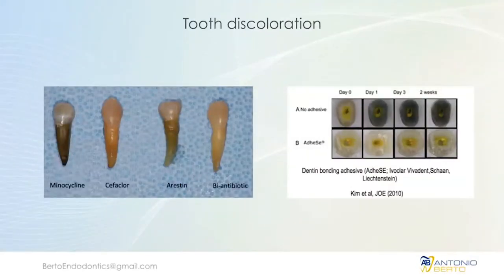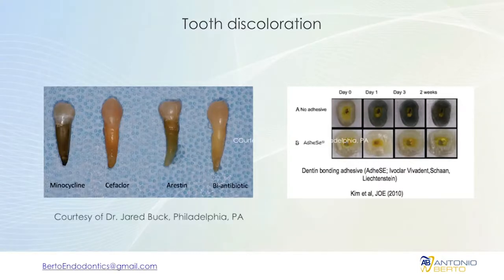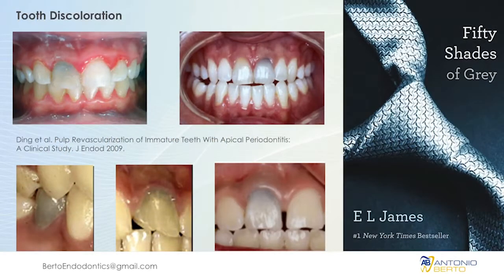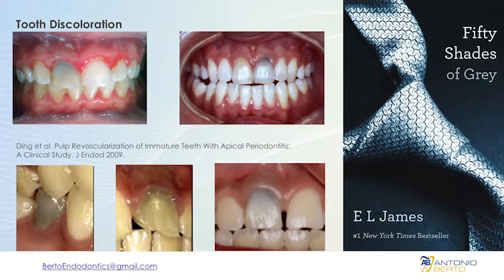Tooth discoloration happens for two reasons. One, if we use tetracycline — we can substitute that for augmentin or just do a double antibiotic paste. And again, bonding the coronal part with an adhesive avoids discoloration from the formaldehyde released from composite materials. I call this the '50 shades of gray' problem — if you don't prevent it, you'll get this type of gray discoloration. This situation can actually be countered with internal bleaching, which typically has really good results.